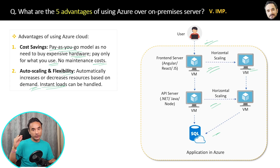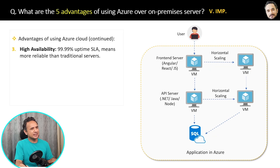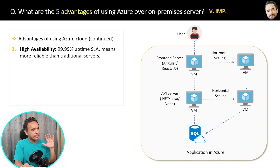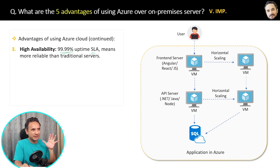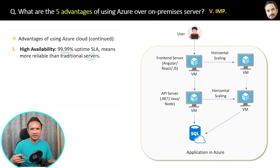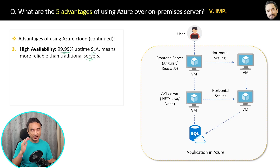The third advantage is high availability. Azure provides a 99.99% uptime SLA, meaning it is more reliable than traditional servers. Your own servers can be down for a day, but Azure servers will almost never be down.